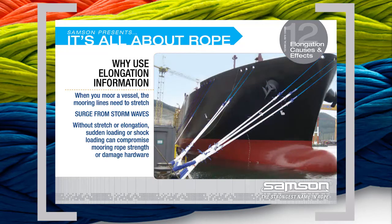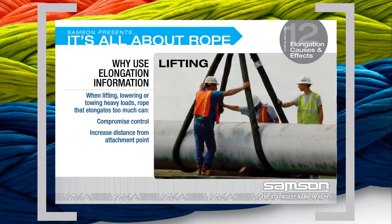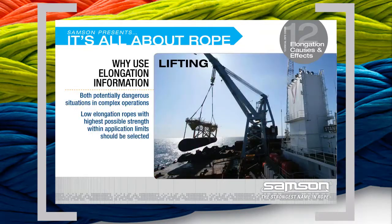Large vessels using high-performance mooring ropes with little elongation intentionally add tails to the lines to increase the elongation of the whole mooring system. When lifting, lowering, or towing heavy loads, a rope that elongates too much can compromise control over the load and increase the distance from the attachment point. Both are potentially dangerous situations in complex operations.